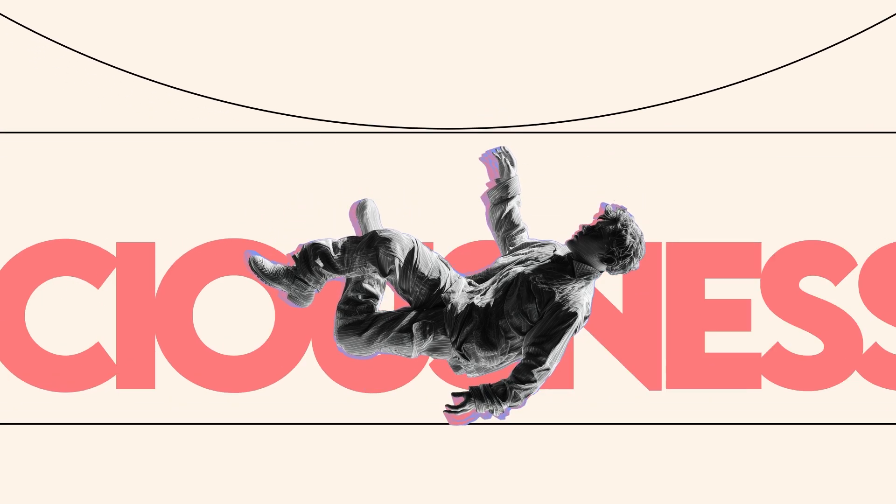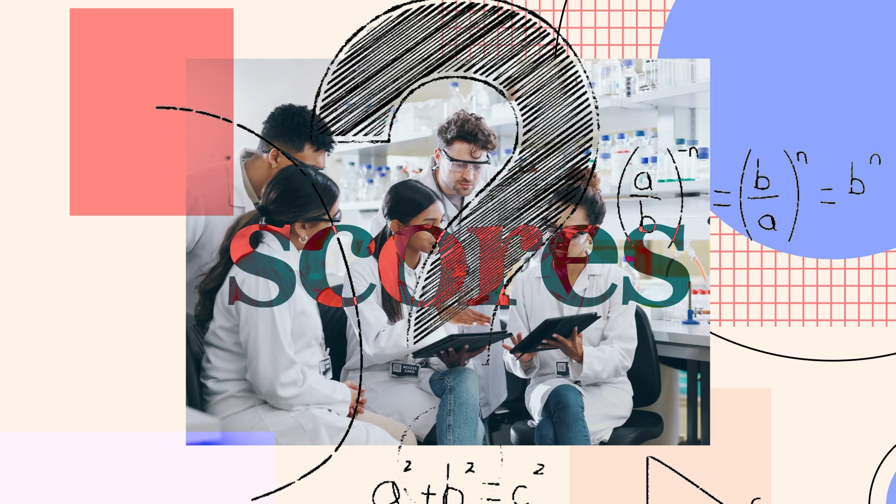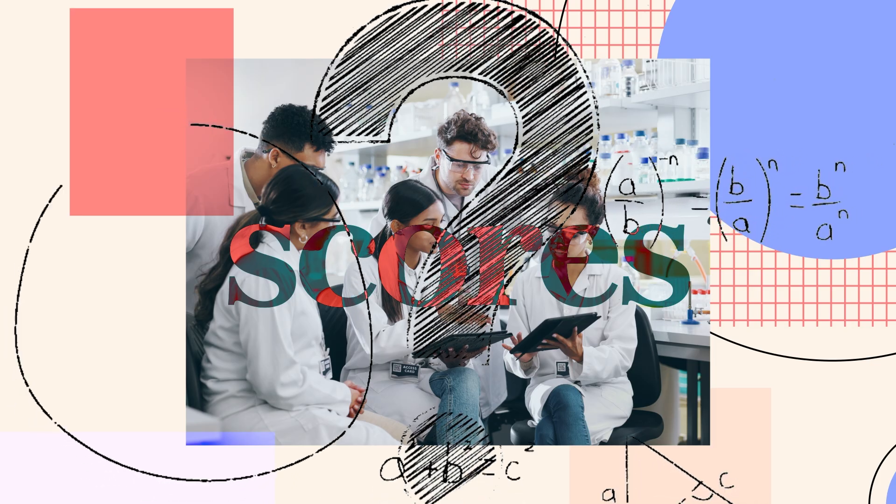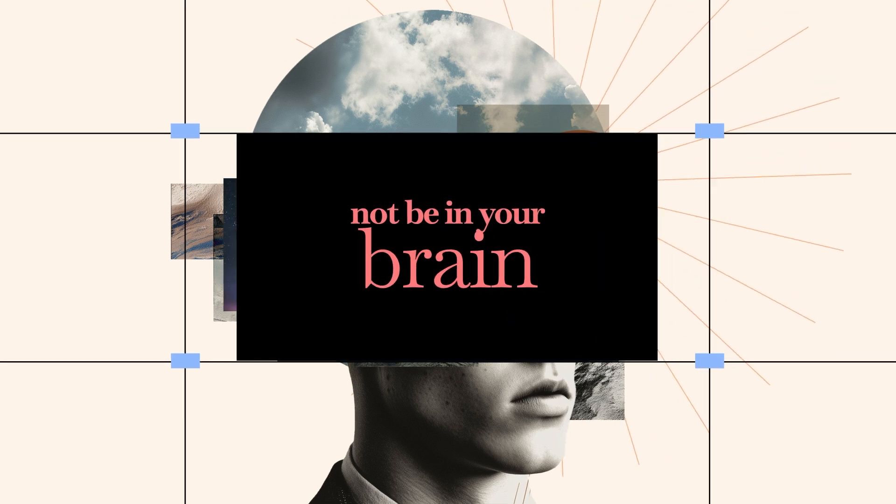And scientists have actually tried to put math on it - equations, algorithms, even scores. Today we're diving into those formulas, but also a wild new perspective that suggests consciousness might not be in your brain at all.